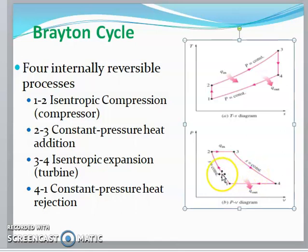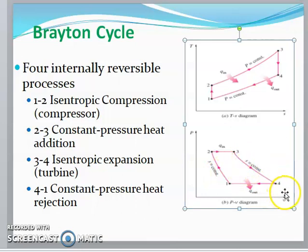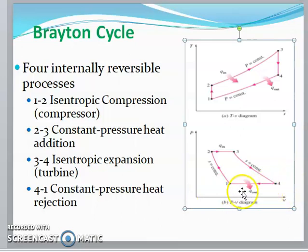Process 3 to 4 is isentropic expansion in the turbine. And the last process, 4 to 1, is constant pressure heat rejection.